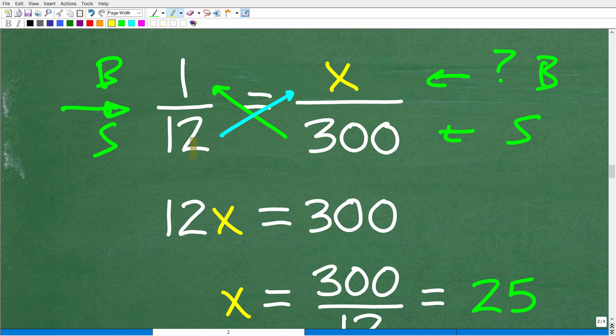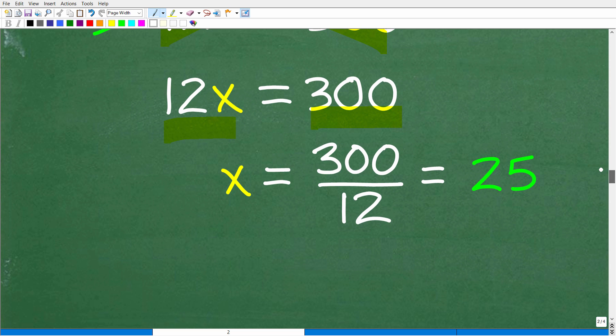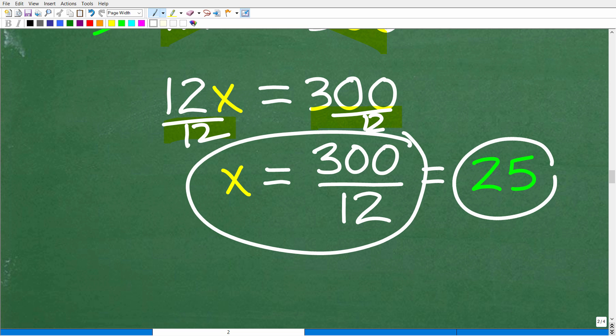Let's do this simple algebra. We're going to cross multiply: 12 times X is 12X. 1 times 300 is 300. Now all we need to do is solve for X. We're simply going to divide both sides of the equation by 12. 300 divided by 12 is 25.